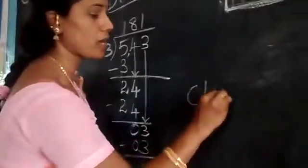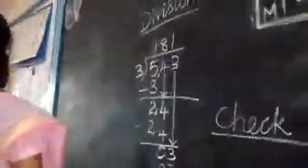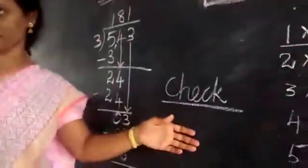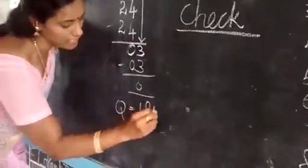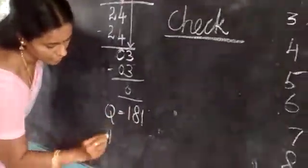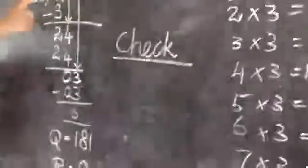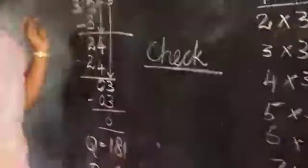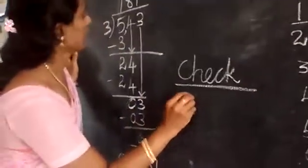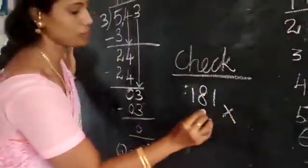Now, check the sum you have done, whether it is correct or not. You can check yourself by doing this. Write the quotient and remainder. Quotient is 181. Reminder is zero. Now, the quotient should be multiplied with the divisor, so that we can get the dividend answer. One eight one, into three.